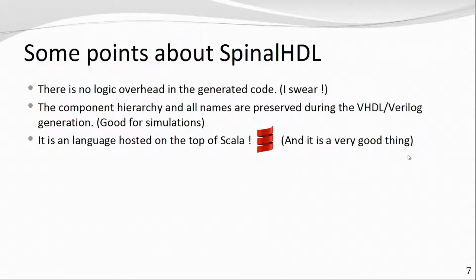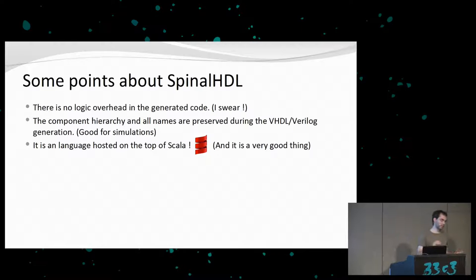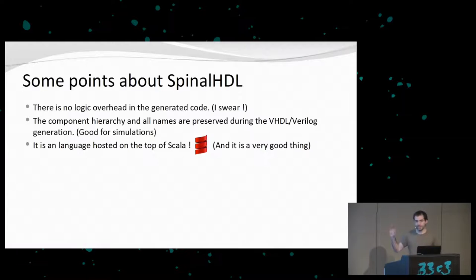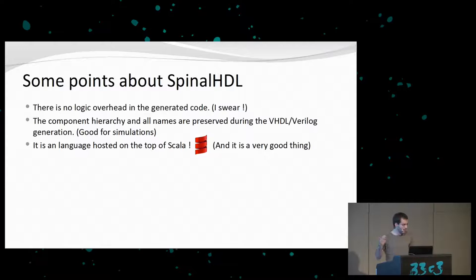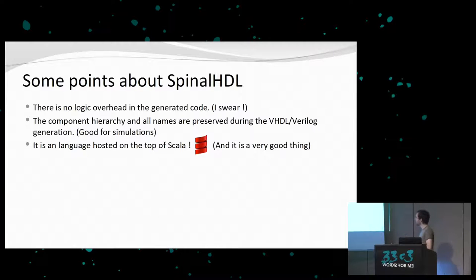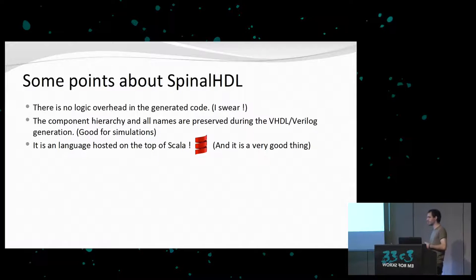A few key points before the examples: SpinalHDL will not create any overhead in the generated RTL — you will not lose gates, you will not lose performance, because it is not an HLS tool like Vivado HLS where you write C algorithms translated automatically into RTL. SpinalHDL is really an RTL approach where you still define registers and gates. All component hierarchy and signal names that you define in SpinalHDL are preserved in the generated RTL, which means you can do your simulation as before with waveforms.